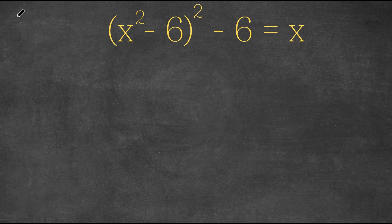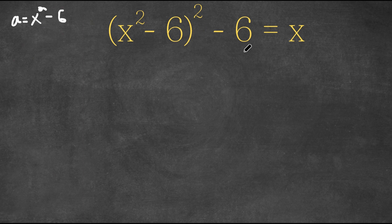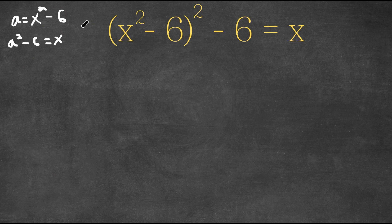What I'm first going to do is set a equal to x squared minus 6. So I'm going to set the variable a equal to x squared minus 6. And if we substitute a in for x squared minus 6, our equation becomes a to the power of a equals x. Let's call this equation 1 and equation 2.